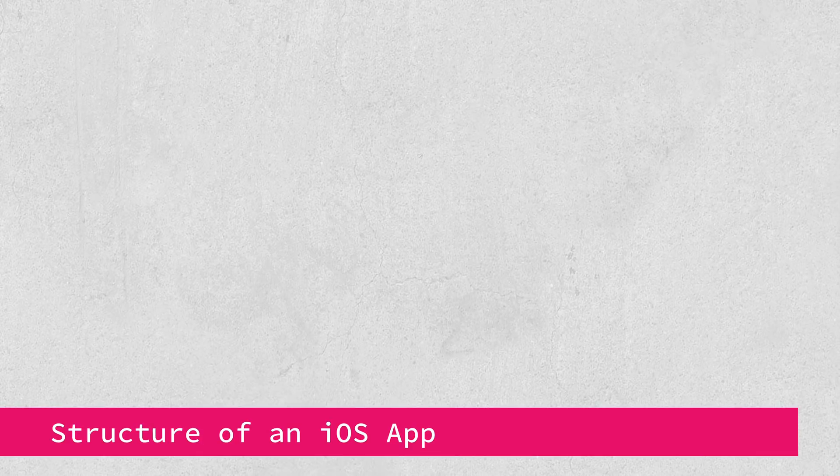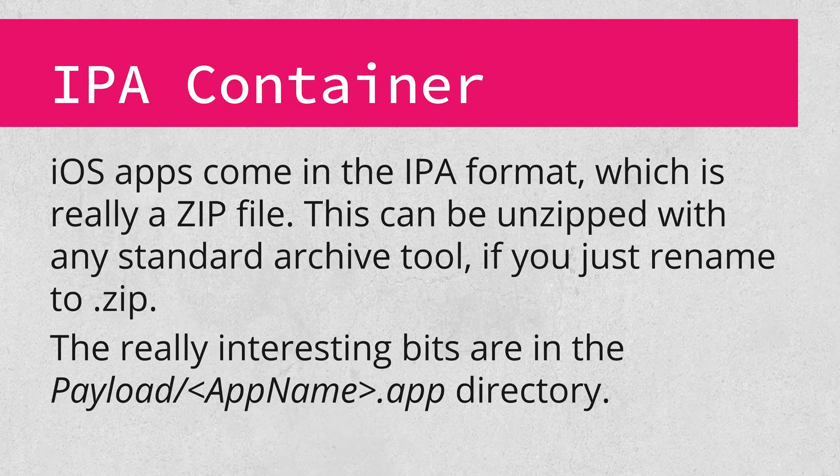First, let's talk about how iOS apps are structured and some key knowledge about the on-disk format. Applications are typically distributed as IPA packages. Conveniently, these are just zip files with a different extension, so you can simply change the extension and unzip it like normal. Inside, you'll find a bunch of metadata, signatures, and most importantly, the Payload/AppName.app directory. That's where most of the interesting bits will be, like the application binary.